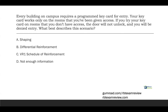Every building on campus requires a programmed key card for entry. Your key card works only on the rooms you've been given access. If you try your key card on rooms you don't have access, the door will not unlock and you will be denied entry. What best describes this scenario? This is a real-life application question. You have a key card — on door A, if you scan it, the door unlocks. On door B, you are denied; the door does not unlock.